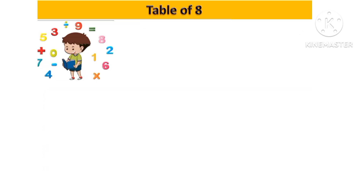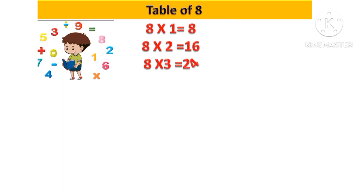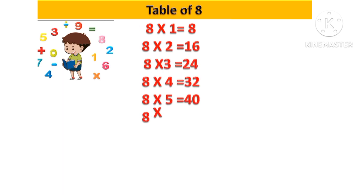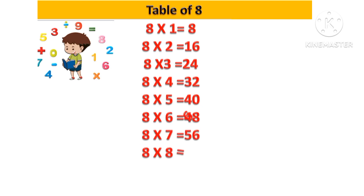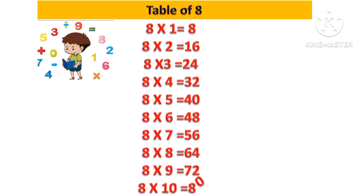Let's revise: 8 one's are 8, 8 two's are 16, 8 three's are 24, 8 four's are 32, 8 five's are 40, 8 six's are 48, 8 seven's are 56, 8 eight's are 64, 8 nine's are 72, 8 ten's are 80.